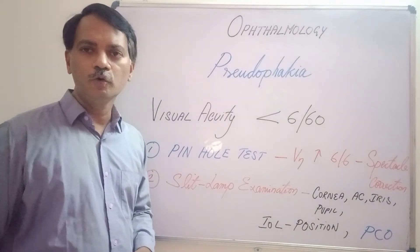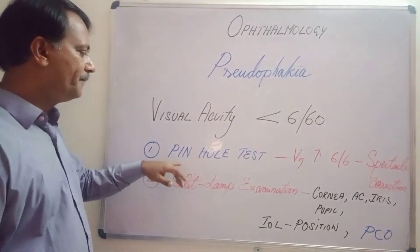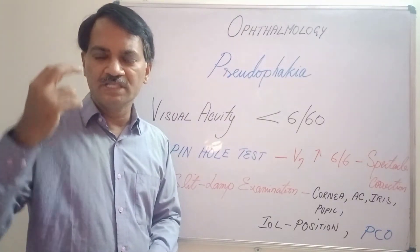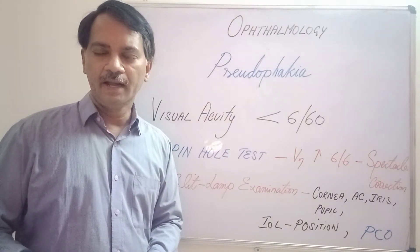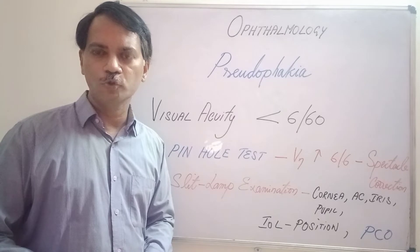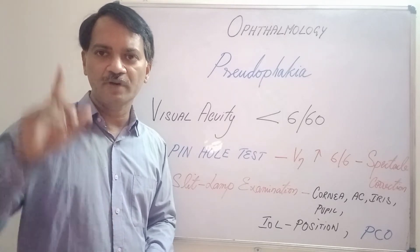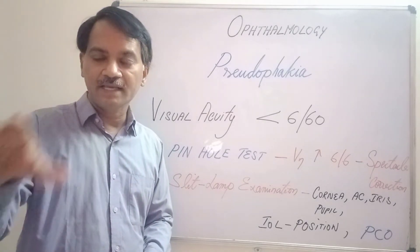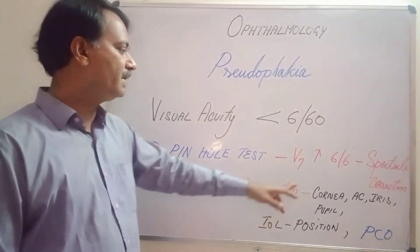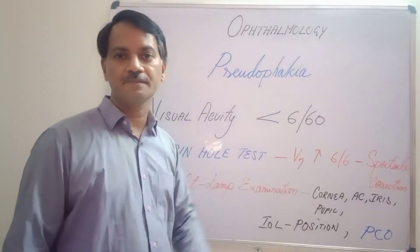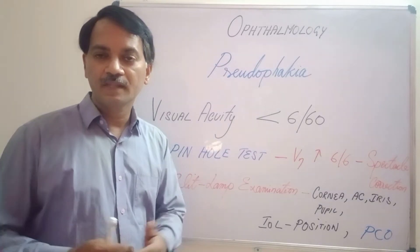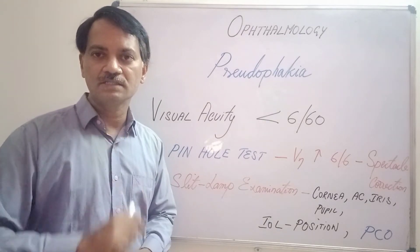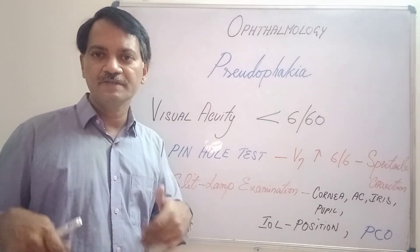The first step in such a situation is to do a pinhole test. The pinhole test uses a small hole in a disc placed in front of the eye, about 1.2 mm, through which the patient is asked to read the Snellen's chart. If the patient is able to read up to the last line and vision improves to 6/6, it indicates that the patient's visual acuity can be improved with spectacle correction. Give power glasses to the patient and the vision will improve.